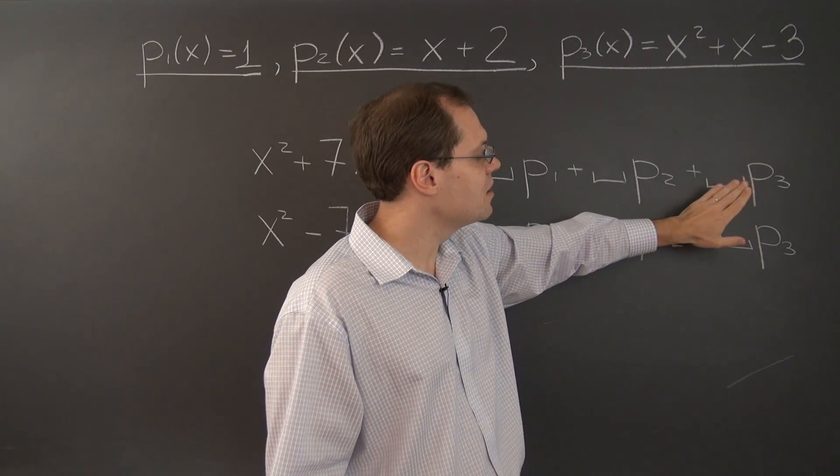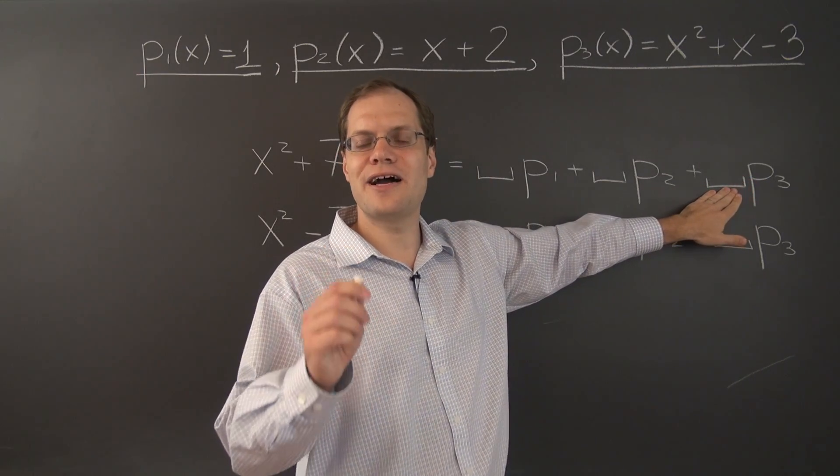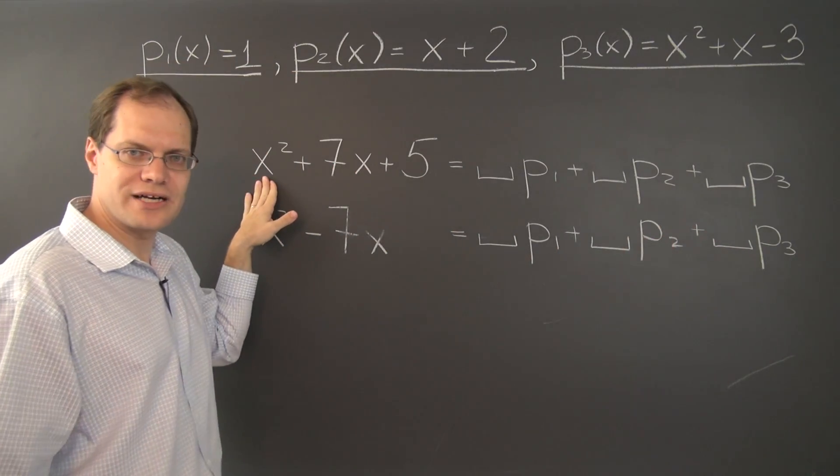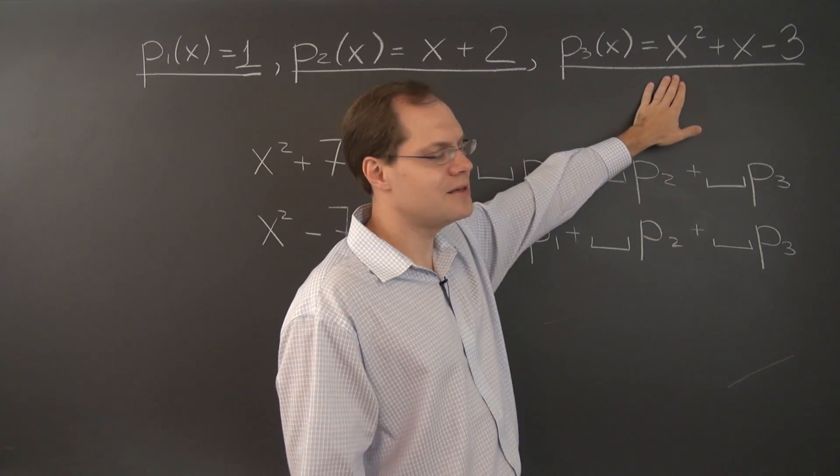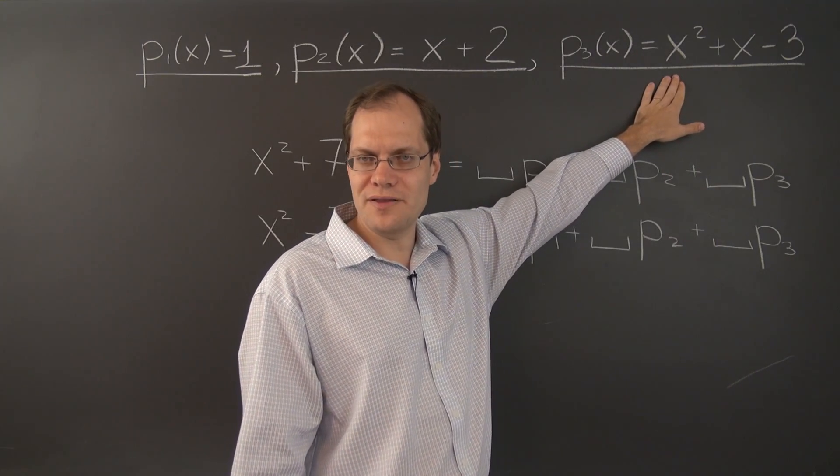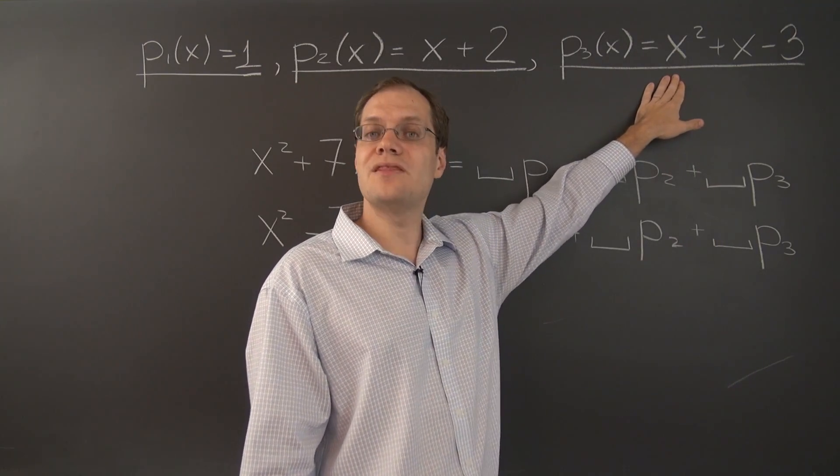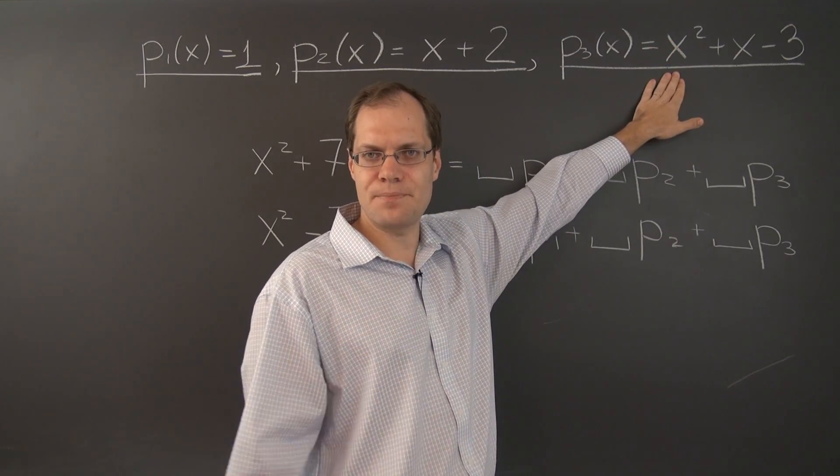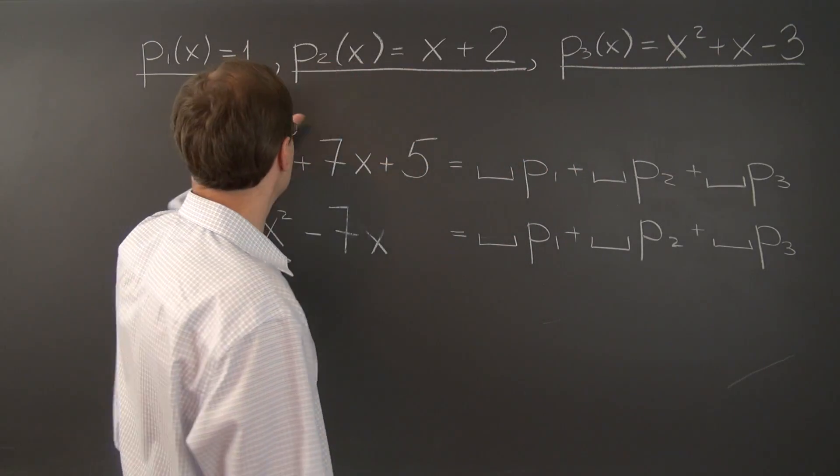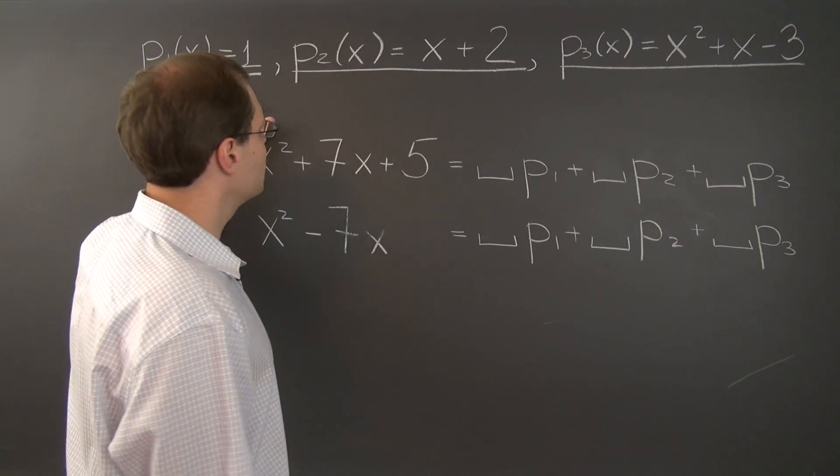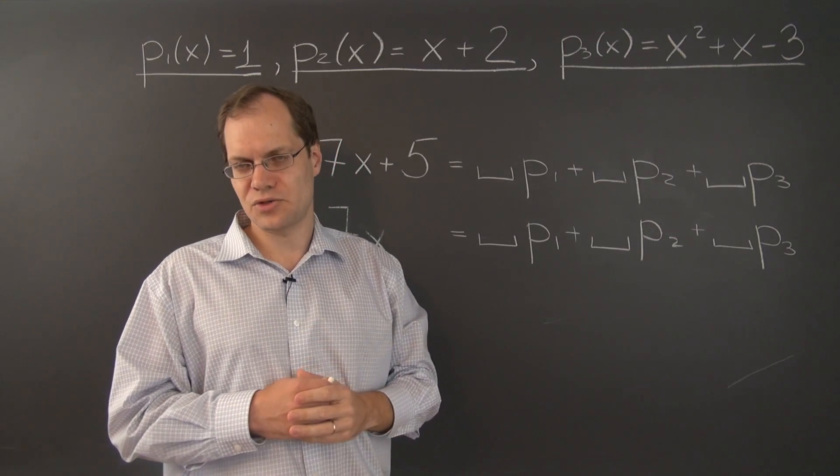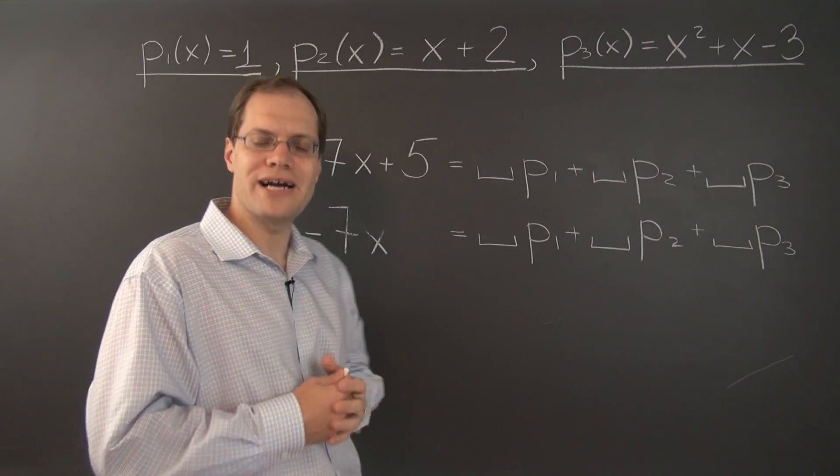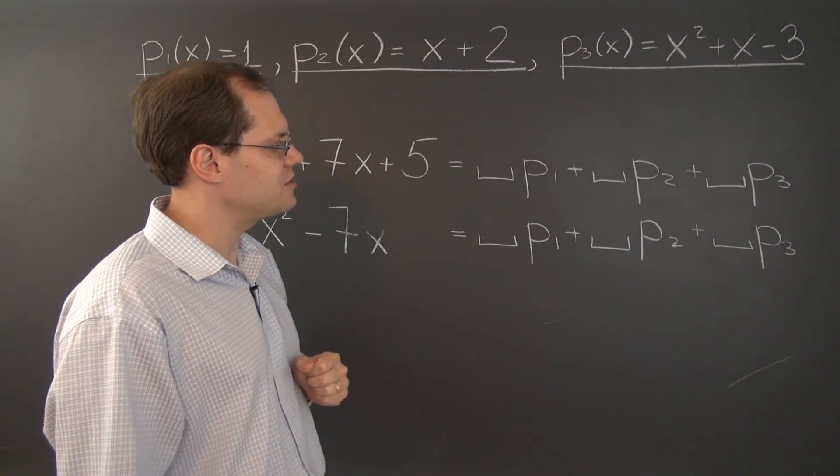And realize that when we look at the last coefficient, that's actually our last chance to get the x-squared term right. Because P3 is the only polynomial that has x-squared. That's why we start with it. We get x-squared right on the first step. And then the subsequent steps, because these other polynomials don't have the x-squared term, that coefficient will remain correct. So that's why we're pursuing this strategy.